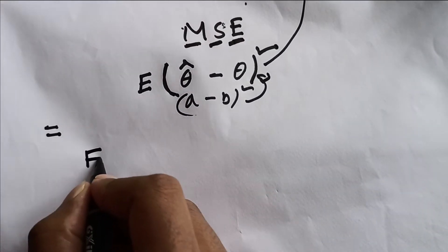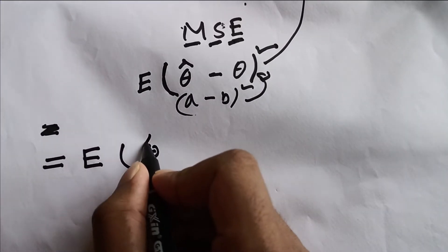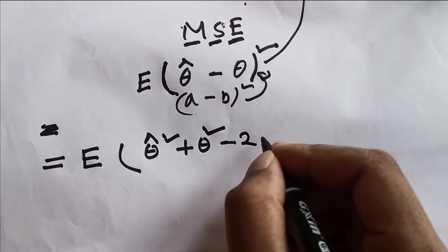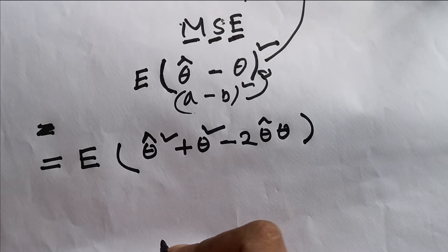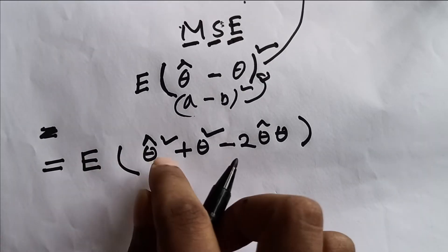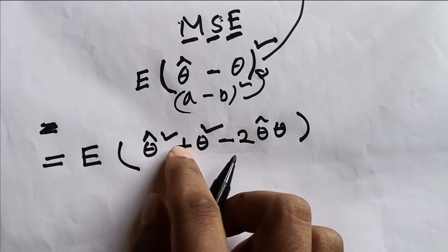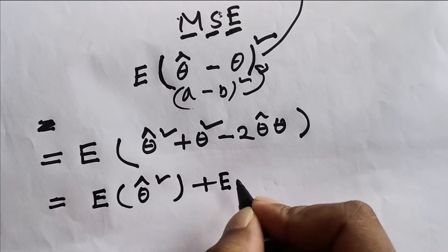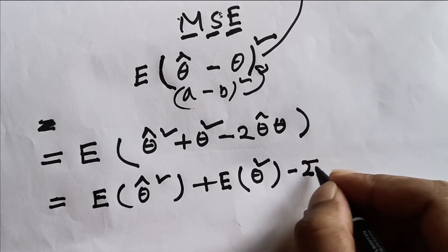First of all, the expected value will expand to: theta-hat squared plus theta squared minus two times theta-hat times theta. That is what it looks like. Now we will give every element in that block an expectation, so we distribute the expectation over each term.